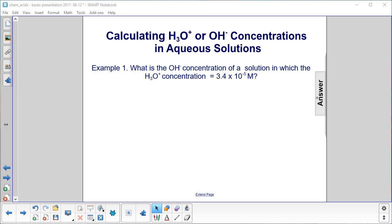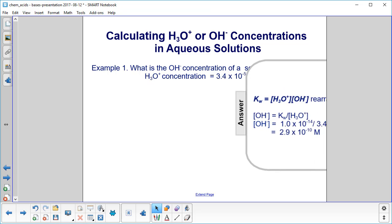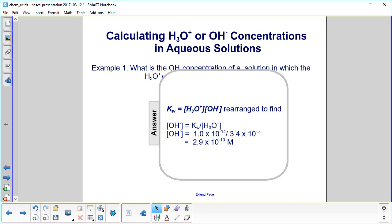Okay, here we go. Here's our equation. We then divide through by the hydronium concentration, because we want to find the hydroxide concentration. We have 1.0 times 10 to the minus 14th divided by 3.4 times 10 to the minus 5th, and we get 2.9 times 10 to the minus 10th molar.